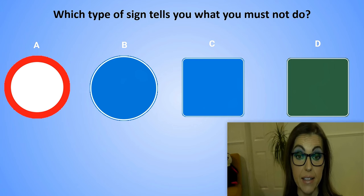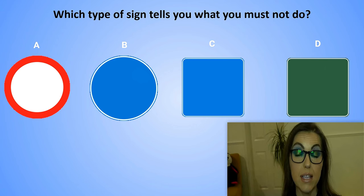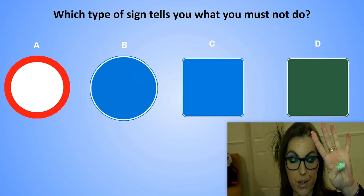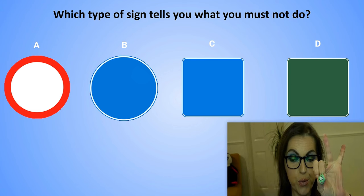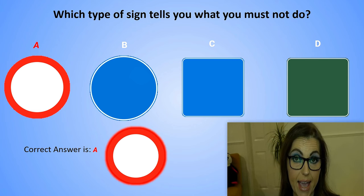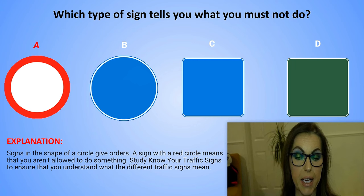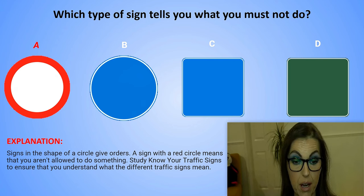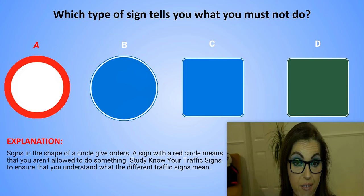Which type of sign tells you what you must not do? The correct answer is A. Explanation: Signs in the shape of a circle give orders. A sign with a red circle means that you are not allowed to do something. Study 'Know Your Traffic Signs' to make sure that you understand what the different traffic signs mean.